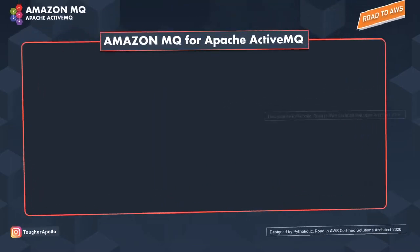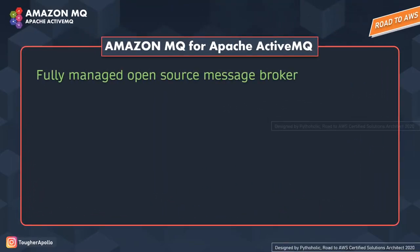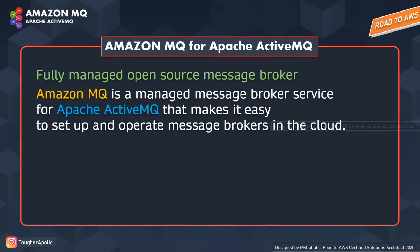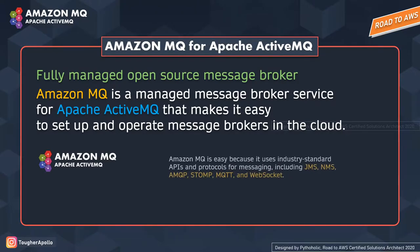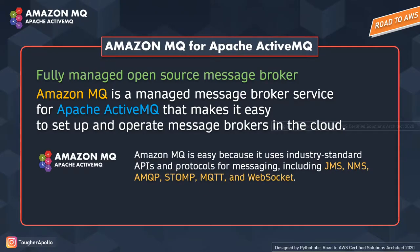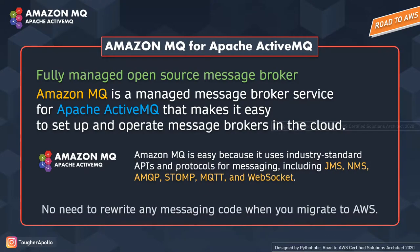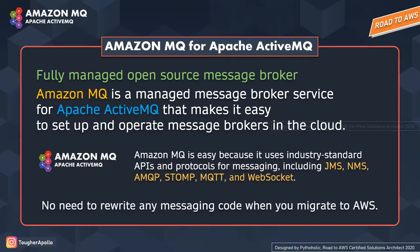When we talk about this phrase Amazon MQ for ActiveMQ, you must understand that Apache and Amazon are two different entities. There is a message broker service called ActiveMQ, and it's already there. If you wish to have an integration of it in AWS, AWS provides you with a solution called Amazon MQ.